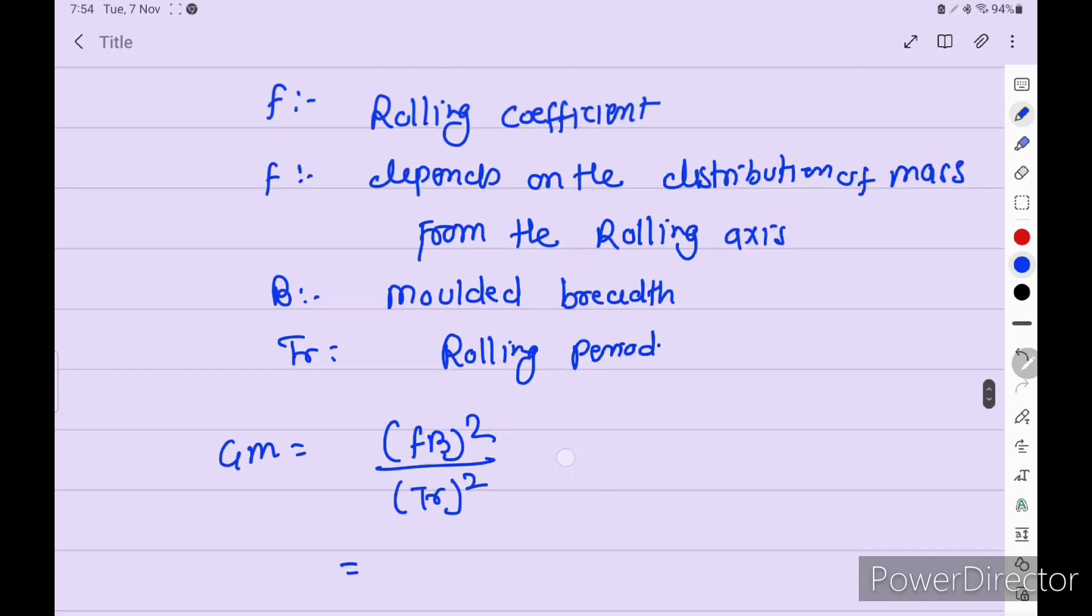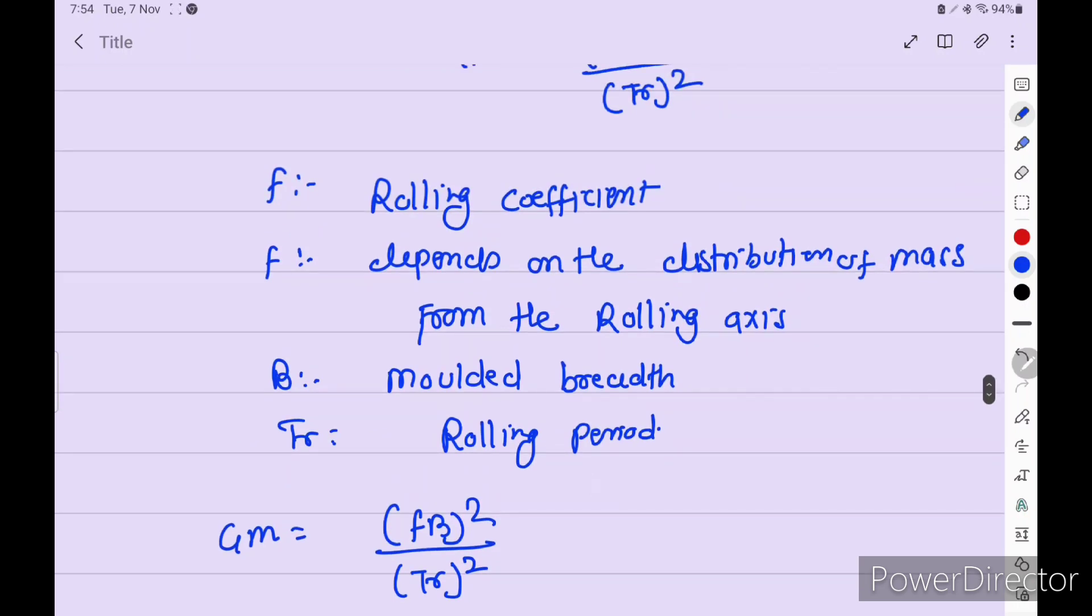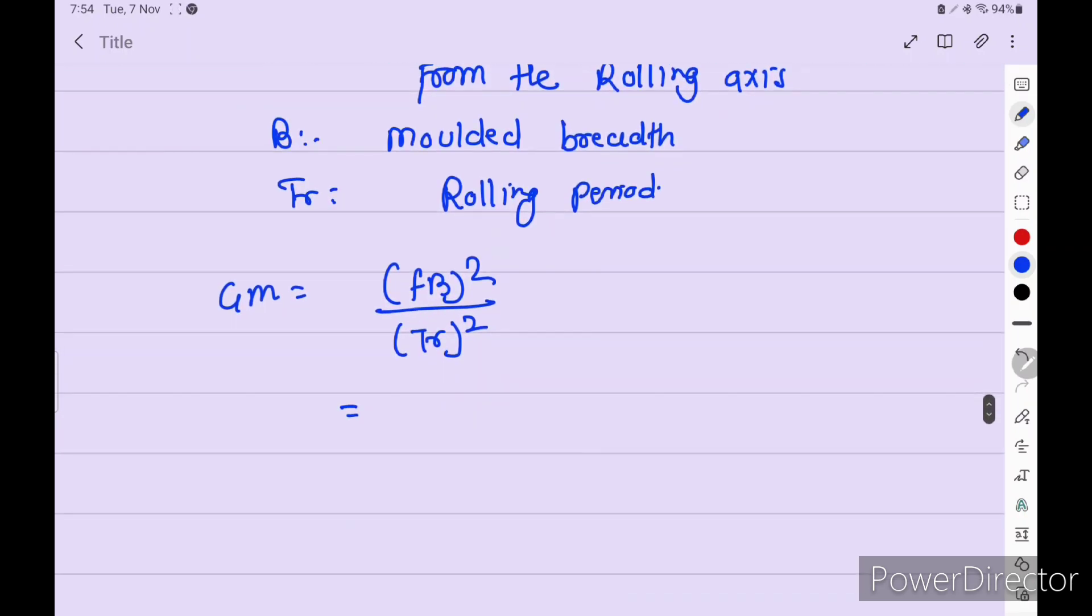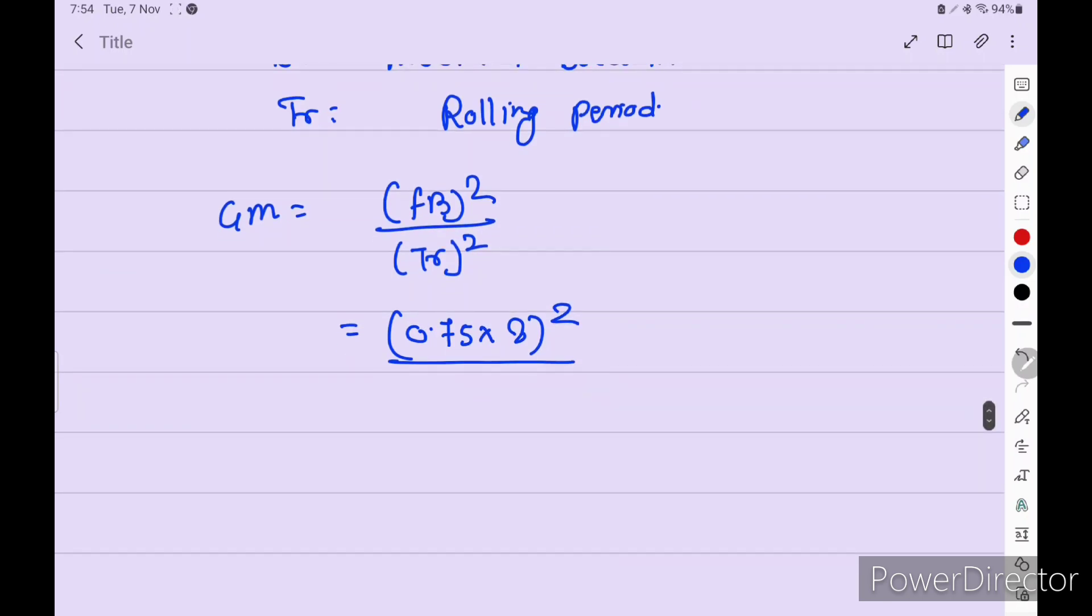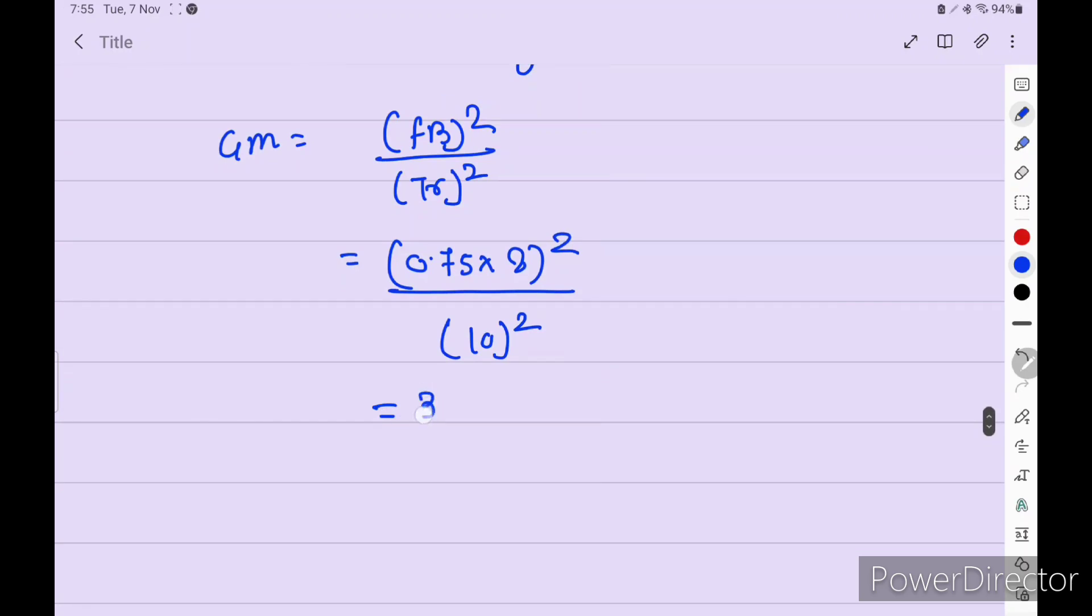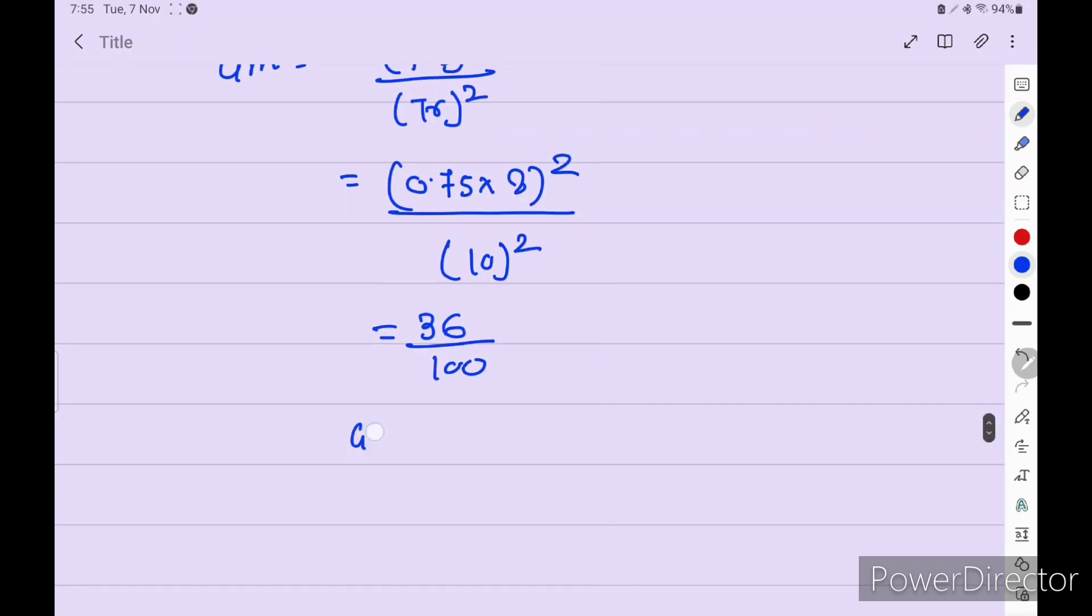Into B, molded breath. Breath is given in the question is 8 meters, squared, divided by rolling period is 10 seconds, so 10 squared. We get 36 divided by 100, and GM we get 0.36 meters.